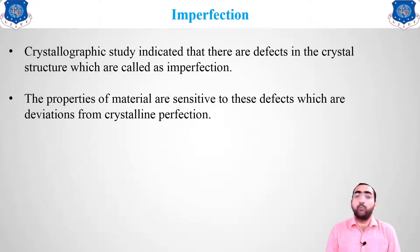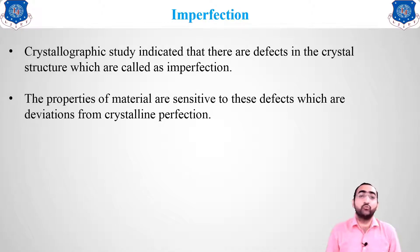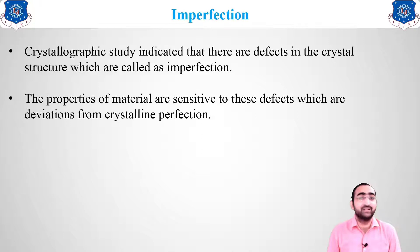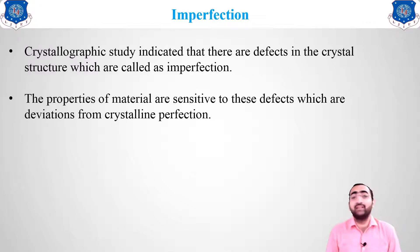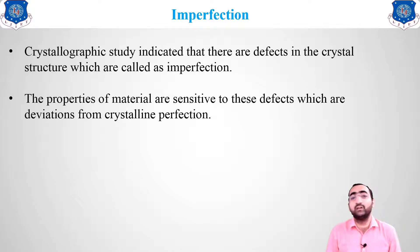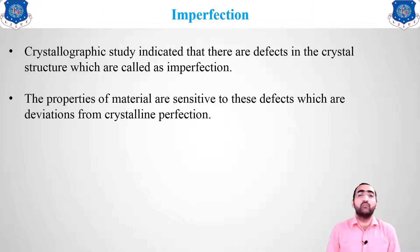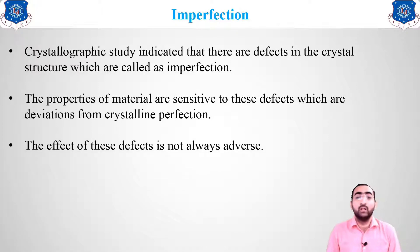What do we mean by imperfection? It is basically the study which indicates the defects present inside the material — which are the likely chances of defects getting inside a particular crystal structure. The properties of the material are very much sensitive, so if any defect occurs inside the crystal system, the properties of the material will likely get deteriorated.